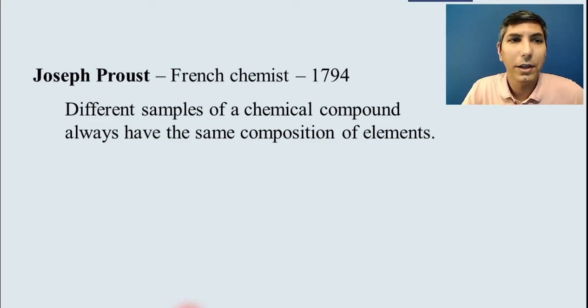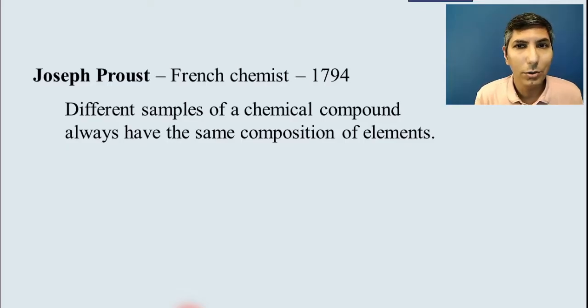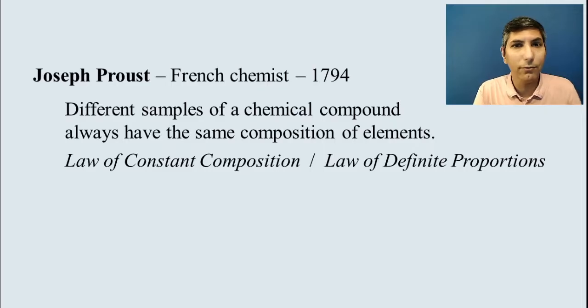In Unit 1, Section 3, we're talking about chemical formulas and where they come from. All the way back in the 1700s, we have this French chemist named Joseph Proust who found that different samples of a chemical compound are always going to have the same composition of elements. He was able to figure this out by analyzing different samples of the same compound. He called this the law of constant composition, sometimes called the law of definite proportions. And we find that this is true today.